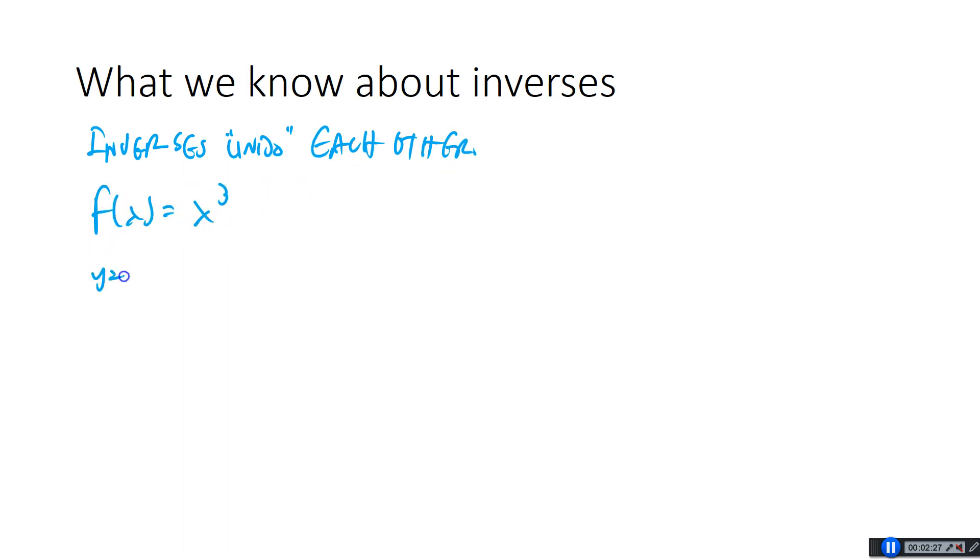Remember the way we found the inverse, we wrote y equals x cubed, we switch x and y, so x equals y cubed, and we solve for y. Y is the cube root of x. This would be f inverse. F inverse of x would be the cube root of x. The whole idea of these is that if you plug them into each other, so you can do f of f inverse of x, or f inverse of f of x, the whole idea was that they both spit back out x. They should both give you back out x. And in this case, they do. Cube root of x cubed is indeed x, and the cube root of x quantity cubed is also equal to x. That works out.